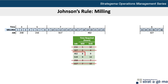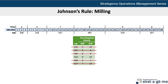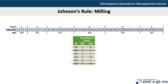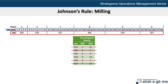The next shortest time is 8 hours required again by the milling department, so we will schedule that after job 617, working from the right. That leaves us with job 519 requiring 9 hours of milling, which will have to be scheduled between jobs 462 and 327. Our job sequence then is 258, 216, 617, 462, 519, and 327. Notice how nicely all of our times fit into the 38-hour timeline.